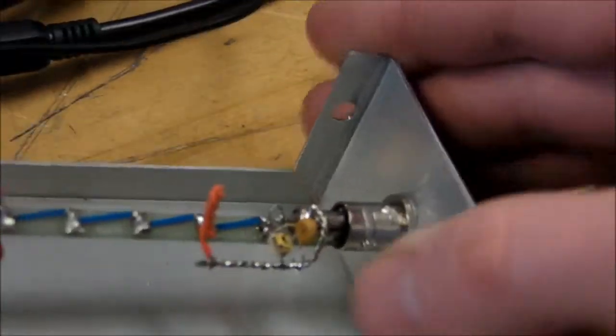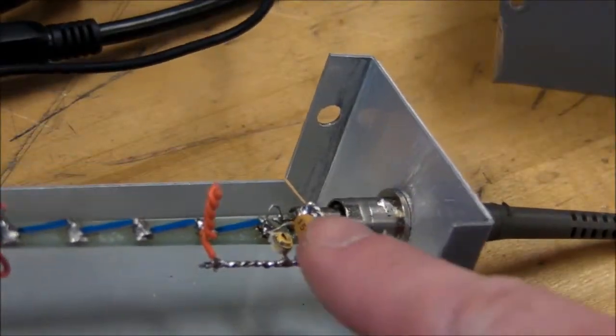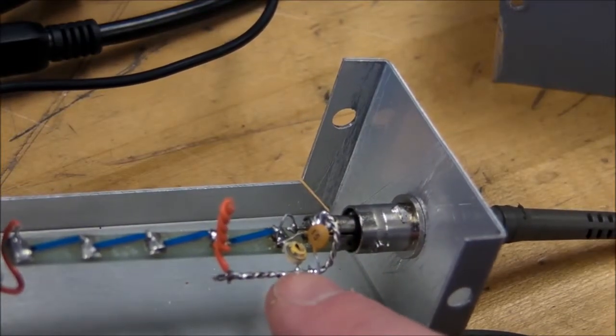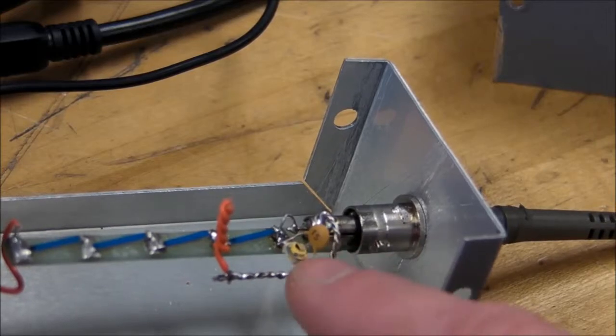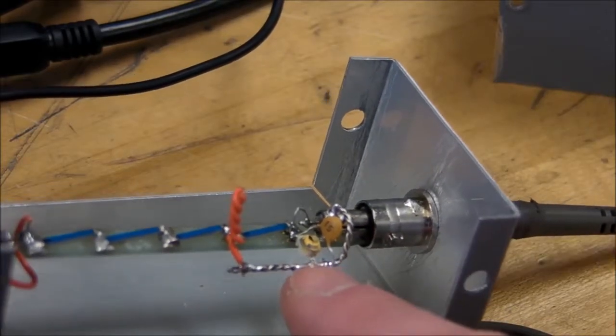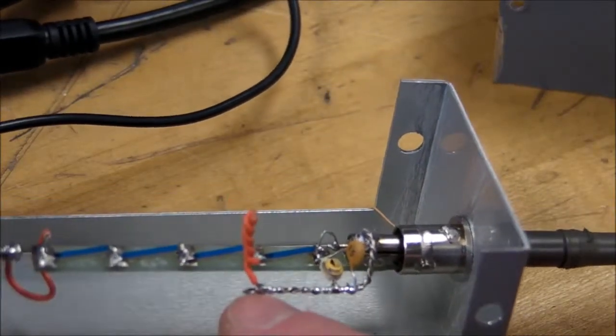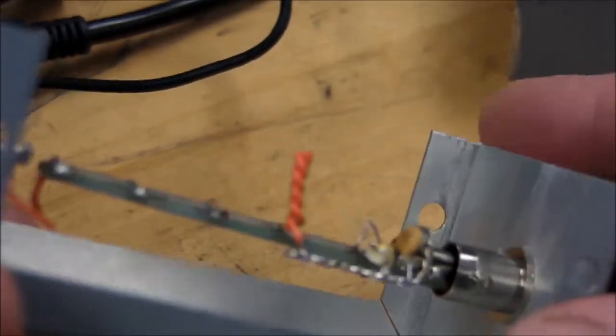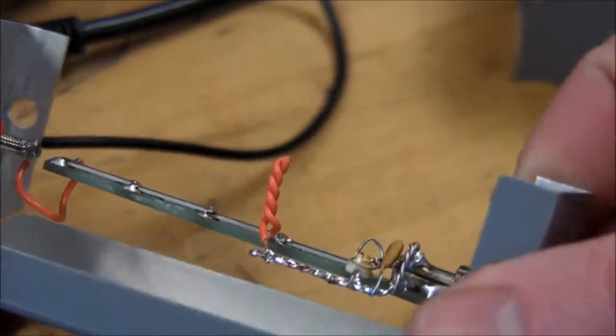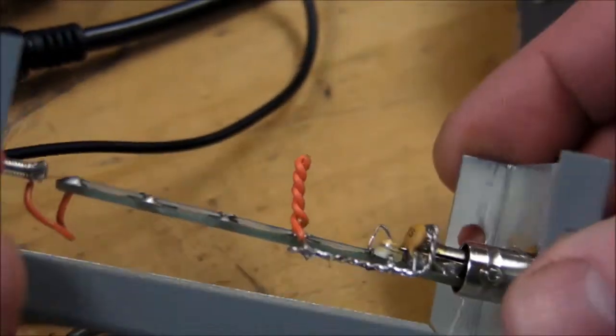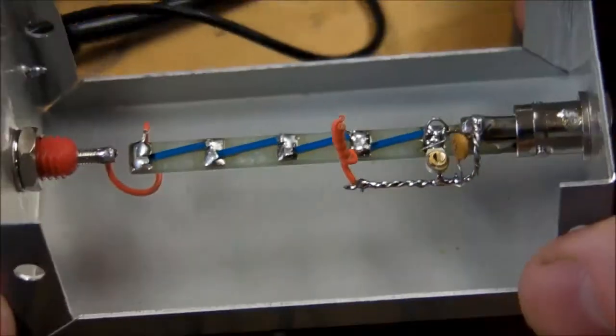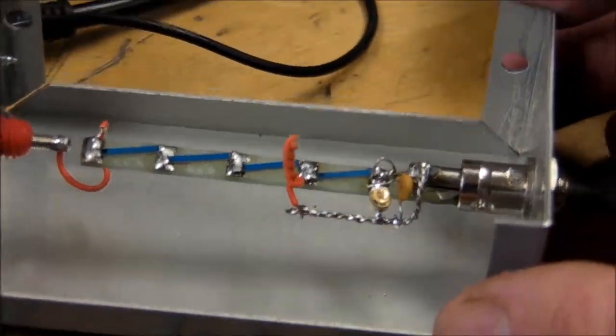Here I've got a capacitor right here with 15 picofarad in parallel with a variable cap, tuned right now to about 40 picofarad total. And this one right here is a common trick-of-the-trade, just a twisted pair of wires, and that probably gives me one or two picofarads. That's a classic method of getting a variable cap.